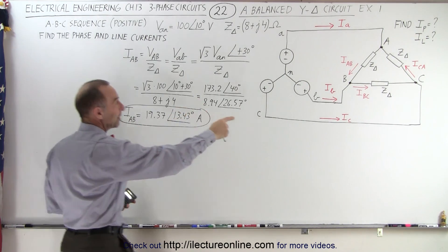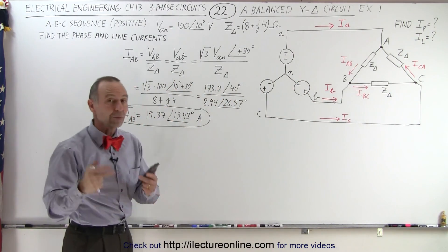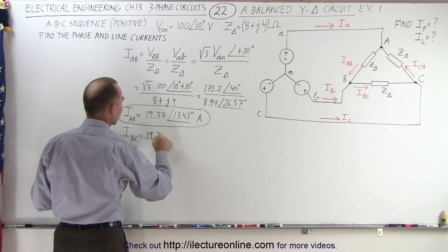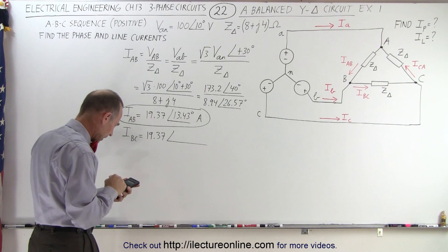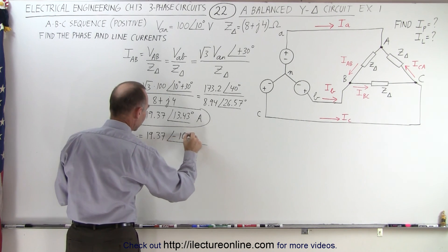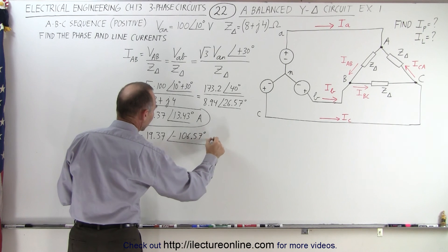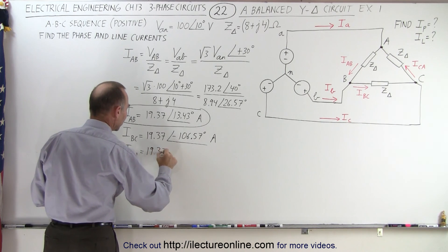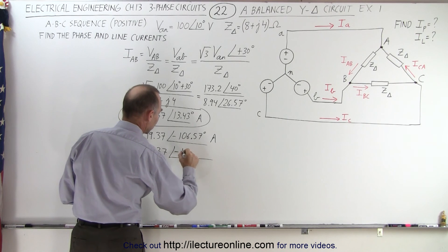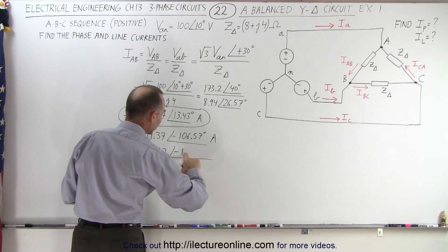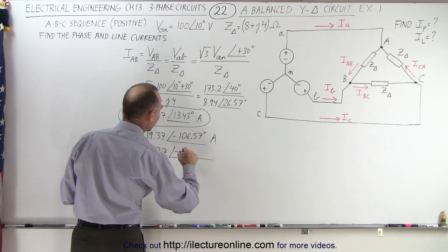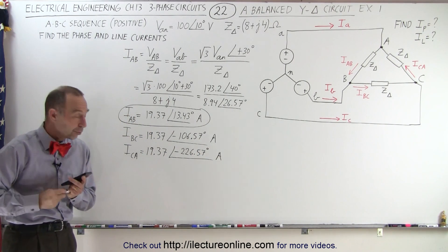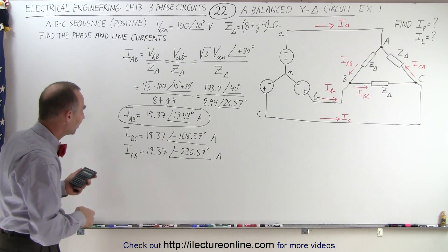To find the other two phase currents IBC and ICA, we simply subtract 120 degrees from each. So IBC equals 19.37 amps with a phase angle of minus 106.57 degrees. And ICA, the third phase current, equals 19.37 amps with a phase angle of minus 226.57 degrees. Those are the three phase currents IAB, IBC, and ICA.